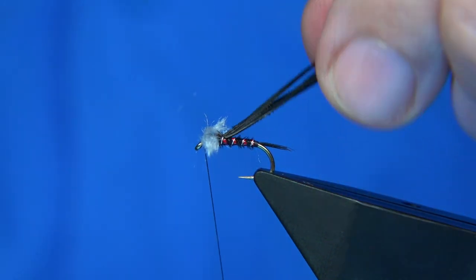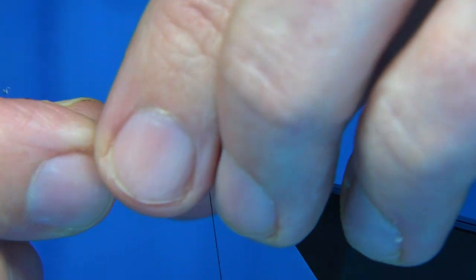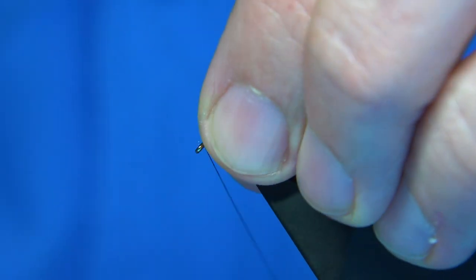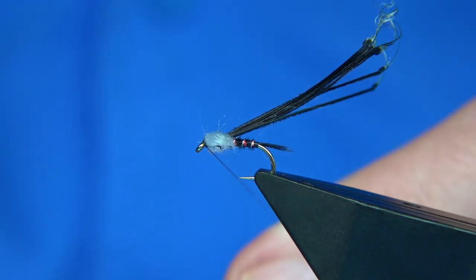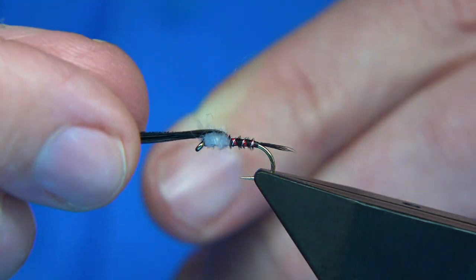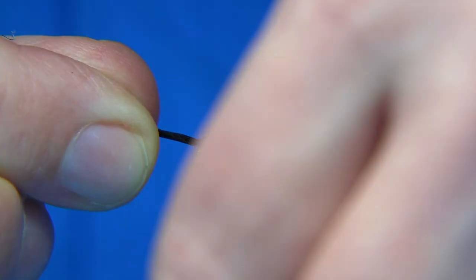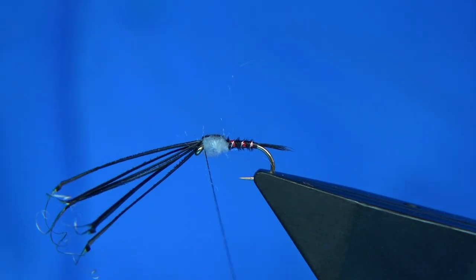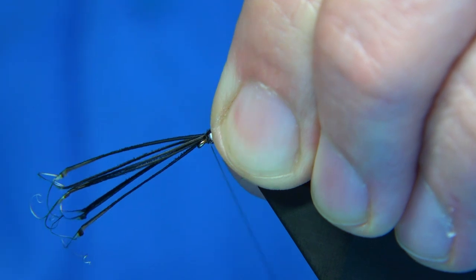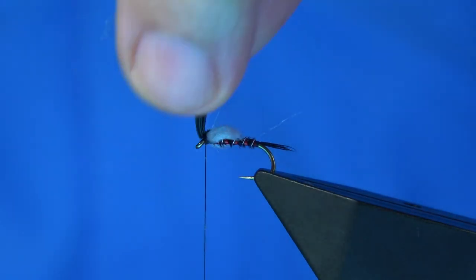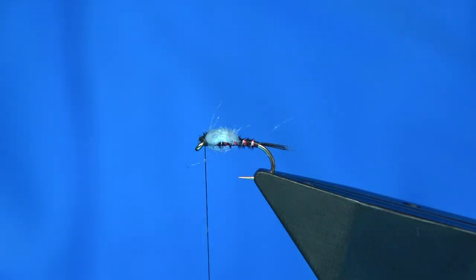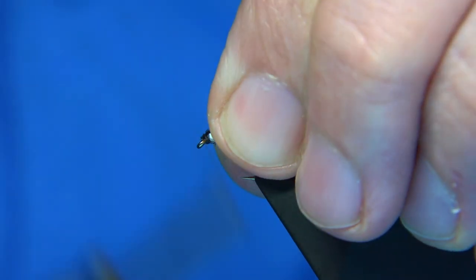Then we can bring over our thorax cover. Now before we do end, make sure there's wax on your thread, and make sure your thread's right up at the breathers, as we call them. And then what we do is come over the top with a turn, pull back, pull the breathers out the way, make sure you get three or four turns in there. Come in with a nice sharp pair of scissors, just trim away, form a nice head.